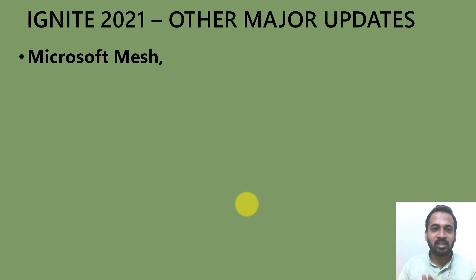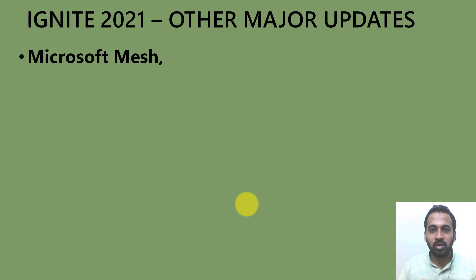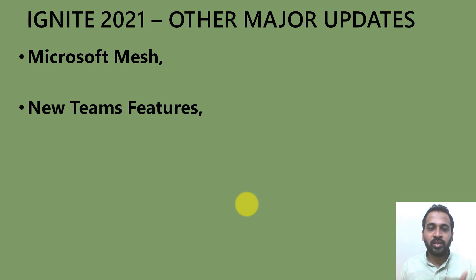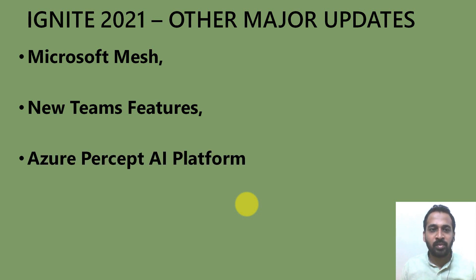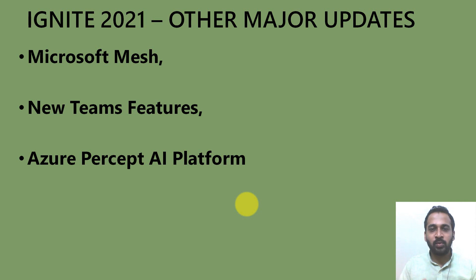The next major release is Microsoft Mesh, which brings augmented reality with the help of Microsoft HoloLens. There are also new Teams features — you can share a Team workspace and collaborate live with peers. Additionally, Azure Percept is an AI platform for AI on the edge. These are all updates that came out of Ignite 2021.